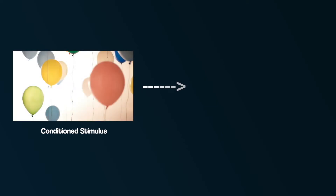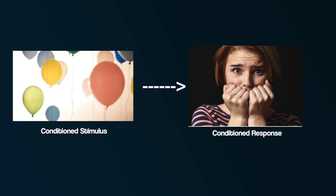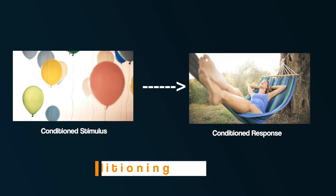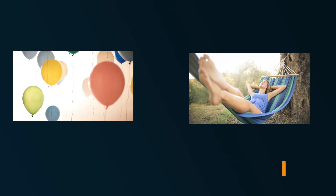In order to treat the patient, the association between the conditioned stimulus — a balloon — and the conditioned response — fear — needs to be broken. And this happens by replacing the fear response with an opposite response: relaxation. This process is called counter conditioning, where the person is taught to associate the object or situation they fear with a new response — something relaxing.